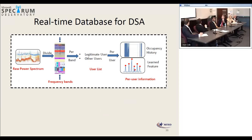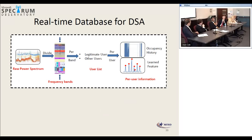DSA is one example that Jesse pointed to — going down this path with a database that gives you more feedback than just a propagation model would, and being able to do more than what you can do with the existing tools.